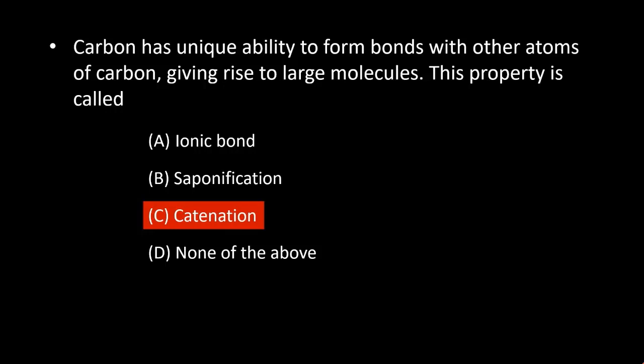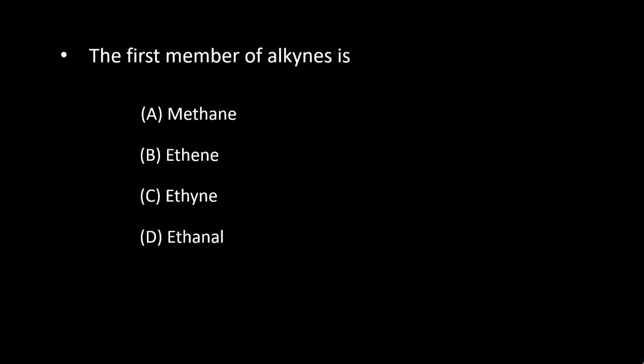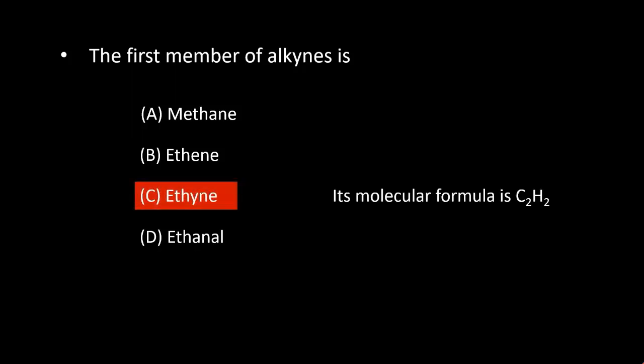Next question: the first member of alkynes is option C, ethyne, and its molecular formula is C2H2. The unsaturated hydrocarbons which contain one or more triple bonds are called alkynes, and their general formula is CnH2n-2.